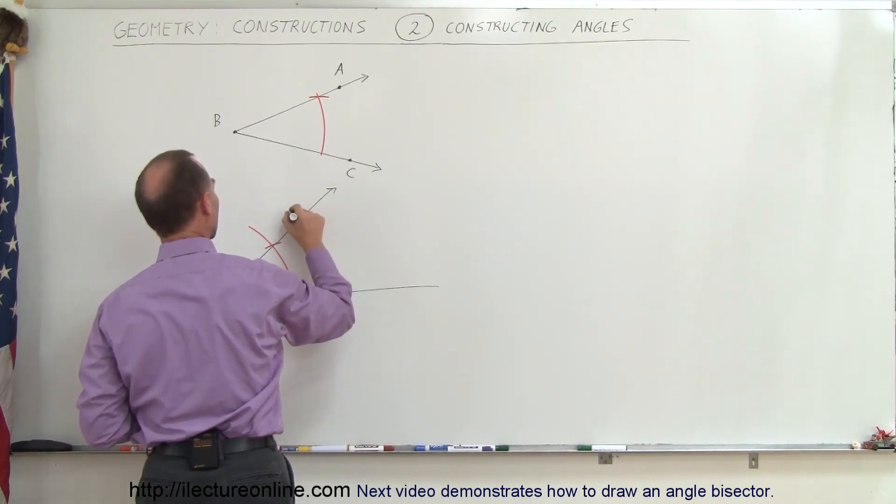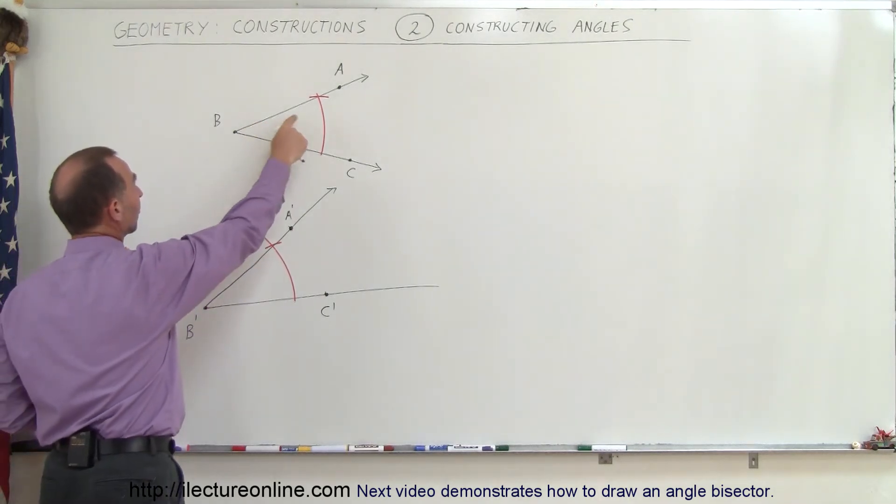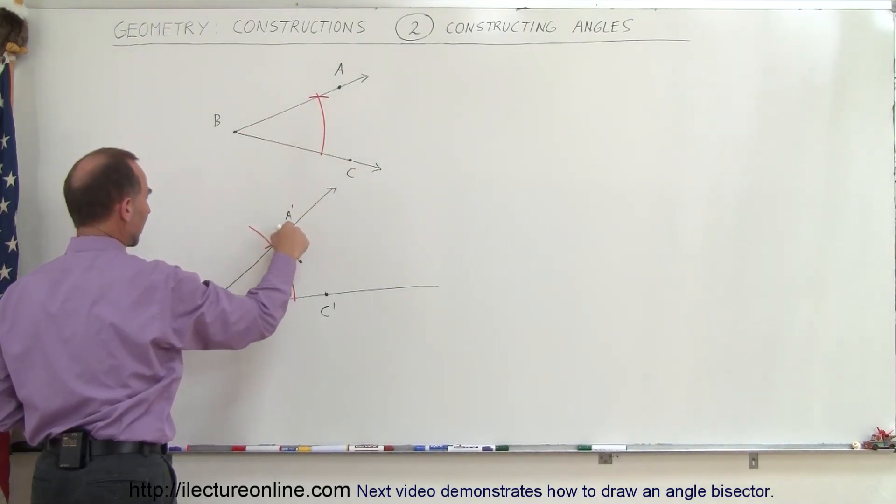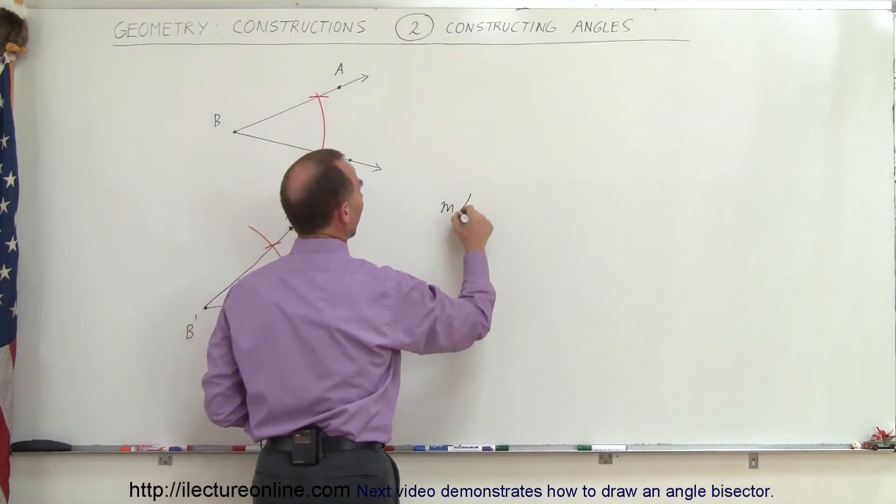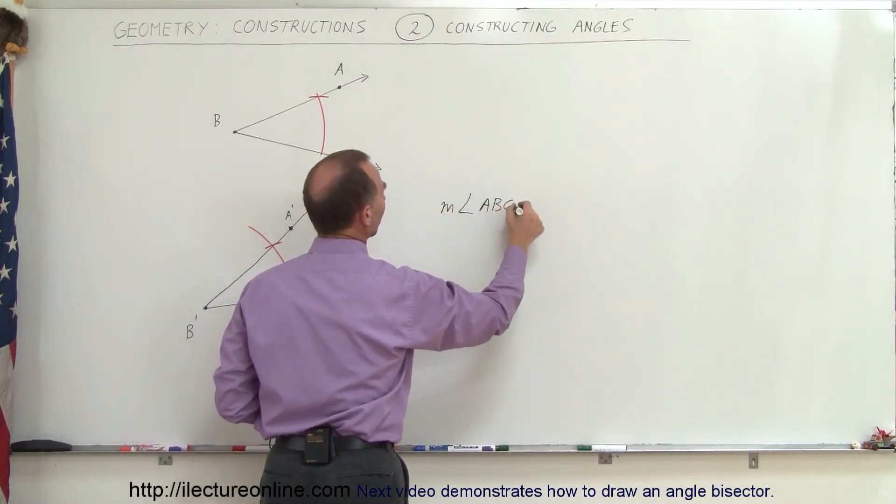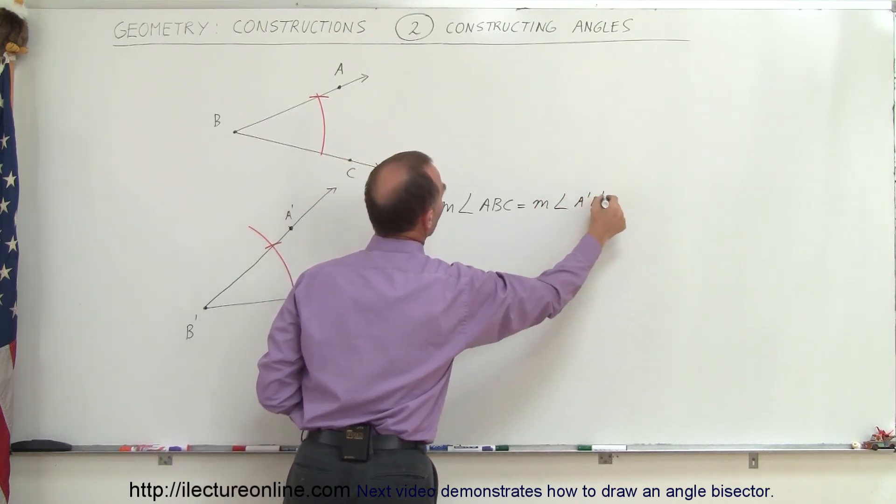And so now I have two angles which are congruent. The angle here from ABC must equal to the angle A'B'C'. So I can say the measure of angle ABC must therefore equal to the measure of angle A'B'C'.